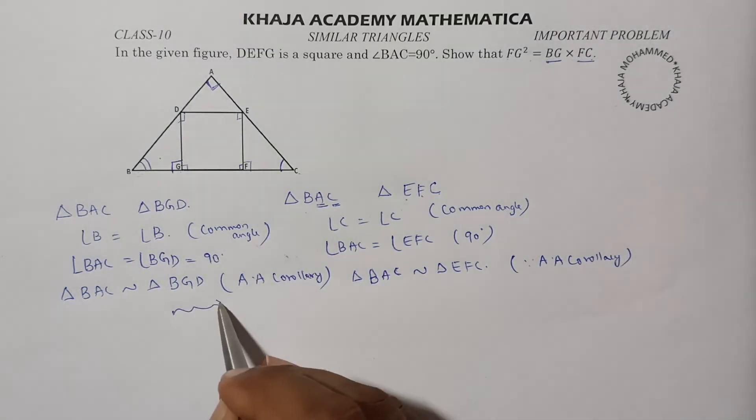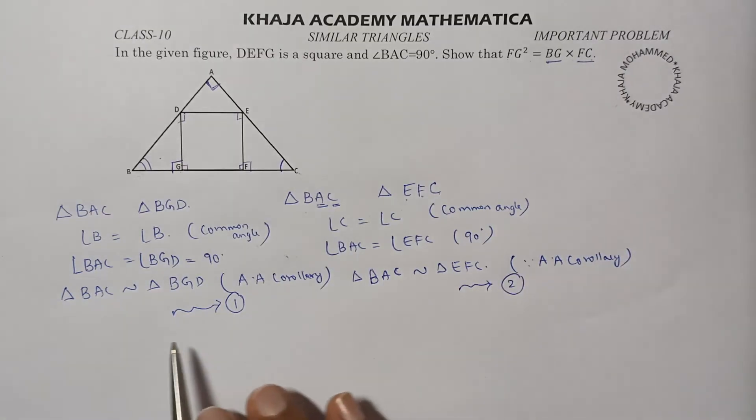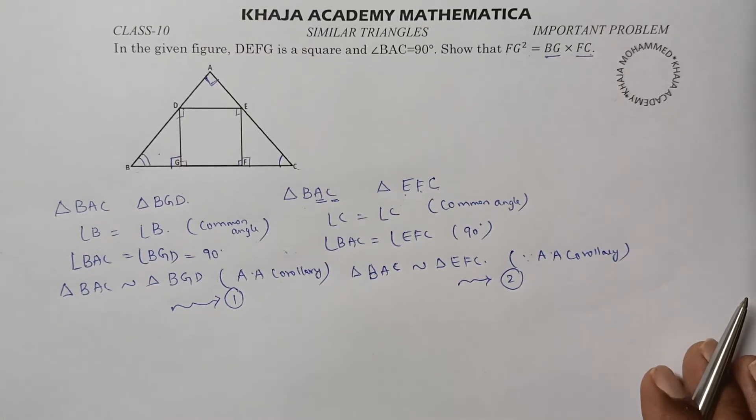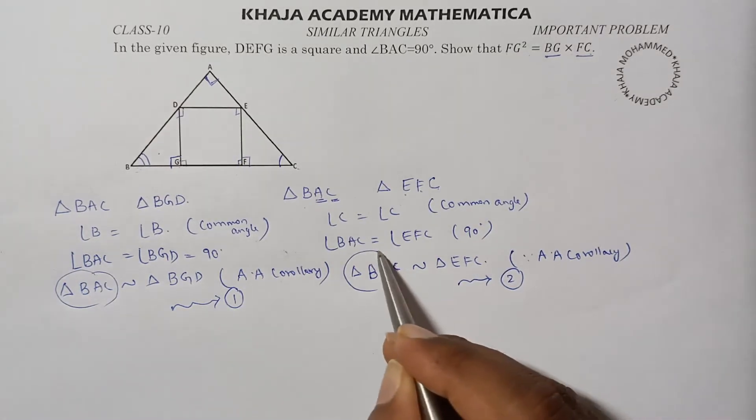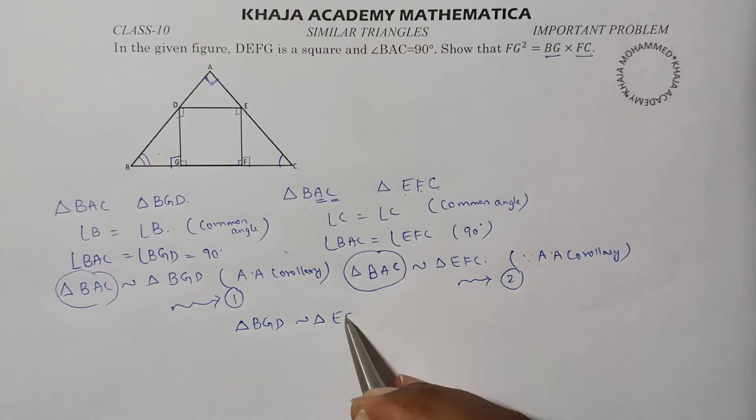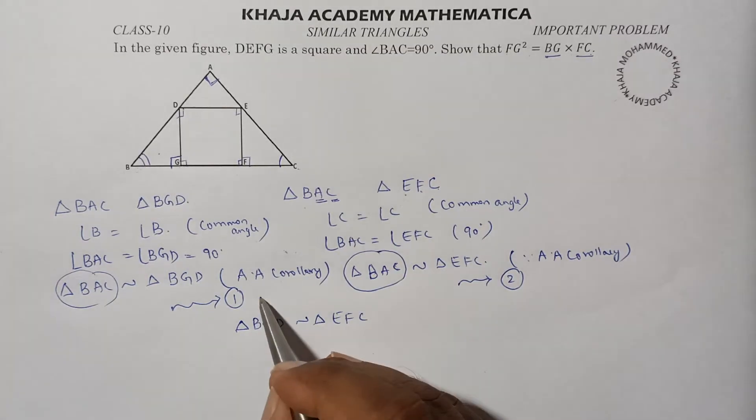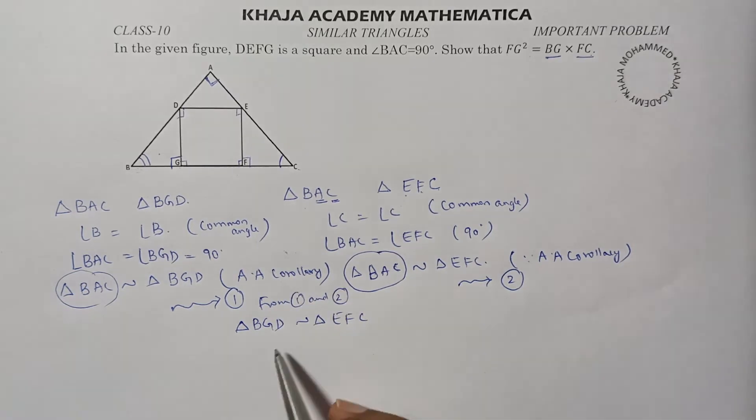This is equation 1 and this is equation 2. From these two, since BAC and BAC are common, I can say that triangle BGD is similar to triangle EFC from equation 1 and 2.